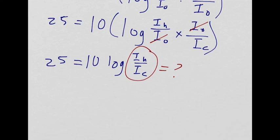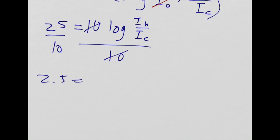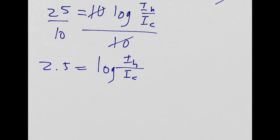So this log is to the base of 10, right? Yeah, this is the logarithm to the base of 10. So I'm just going to divide out first this 10 from both sides. Get rid of that. So that gives me 2.5 equals log IH over IC. Can you convert that to exponential form? What would it be? 10 to the power of 2.5 equals the ratio that I wanted to compare. Nice. 10 to the 2.5.